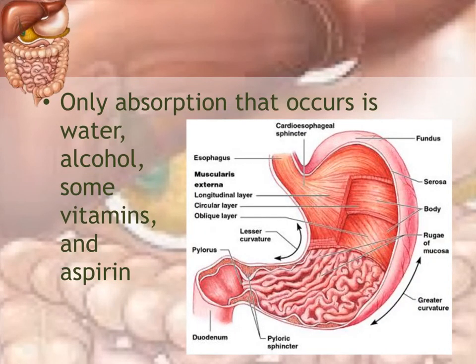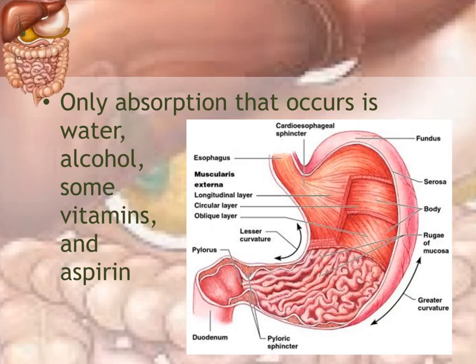There is no absorption of food nutrients in the stomach; the only things absorbed are water, some alcohol, some vitamins, and aspirin. When you drink on an empty stomach, alcohol is absorbed directly through the stomach lining and you get drunk faster. Similarly, aspirin is acidic, and taking aspirin on an empty stomach means it is absorbed directly and can irritate the stomach lining.